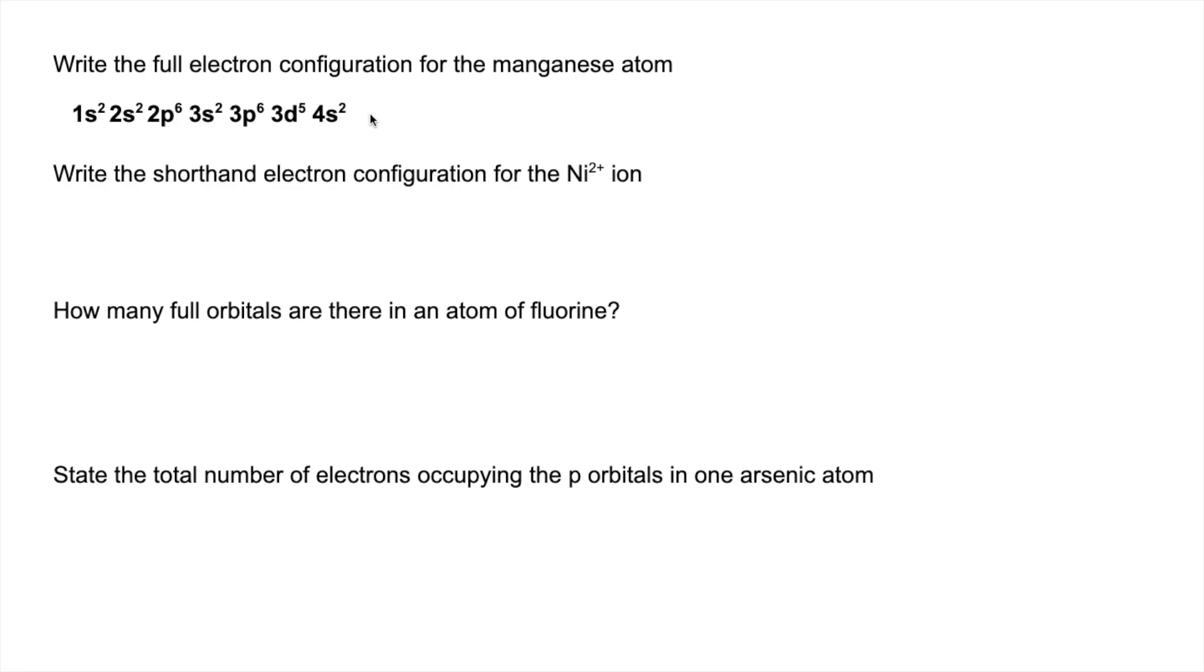Shorthand electron configuration now for the nickel 2 plus ion. So I'm going to start by doing the atom. So this is not the final answer, this is for the atom. And there's a couple of things we've got to bear in mind. When nickel loses two electrons, it's the 4s electrons that are lost first. So they're going to disappear.